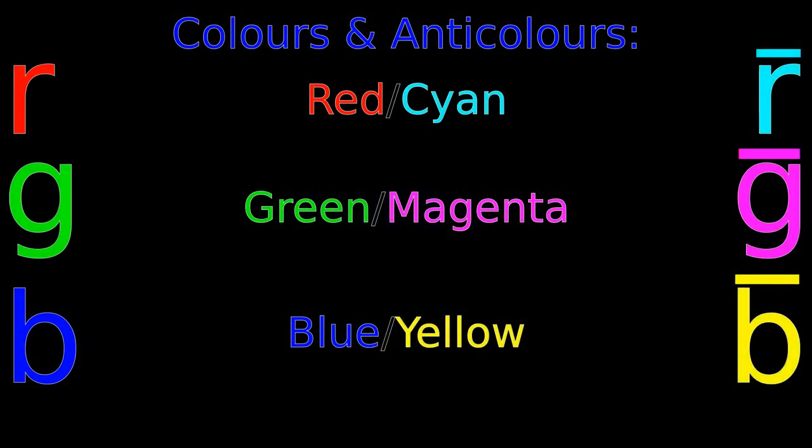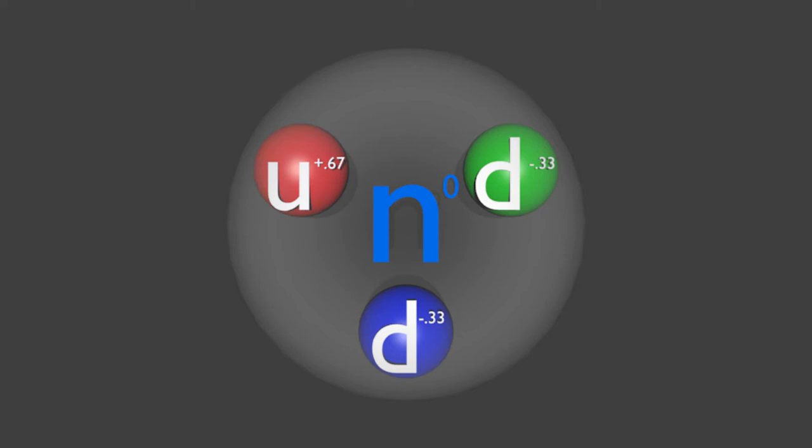When representing anti-colors in a diagram it is common practice to simply invert the ordinary color and this video is no exception. Therefore anti-red is cyan, anti-green is magenta and anti-blue is yellow. Please note that as all this takes place on a quantum scale it is impossible to determine what colors and anti-colors are actually involved in any particular interaction or even when any interaction will occur. I'm just putting in certain possibilities here.